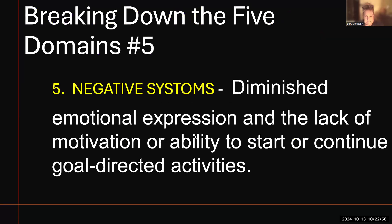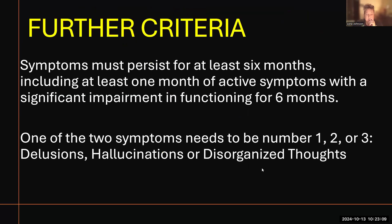Number five on the list was negative symptoms — diminished emotional expression and the lack of motivation or ability to start or continue goal-directed activities. There is further criteria needed: not only do you need to meet two of those domains, but the symptoms need to persist for six months. They need to have one month of active symptoms from the five domains with a significant impairment in functioning ability for six months. Additionally, one of the two symptoms needs to be from the first three on the list — either delusions, hallucinations, or disorganized thoughts.